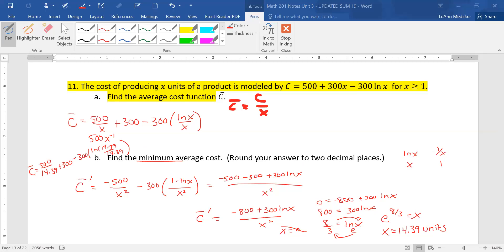So let's do that fraction part first. So that is 14.39 natural log divided by 14.39 times a negative 300 plus a 300. And then we have plus, I'm going to put this in parentheses, 500 divided by 14.39. And if I round that to two decimal places, that'd be $279 and 15 cents.